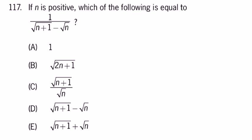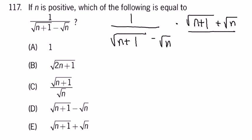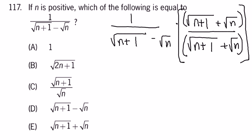We are going to multiply the top and bottom of this fraction by a well-chosen version of 1, which is the square root of N plus 1 plus the square root of N divided by the square root of N plus 1 plus the square root of N. That's just 1 of course.